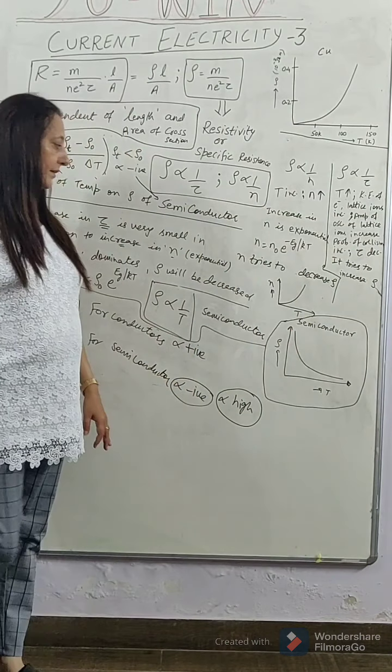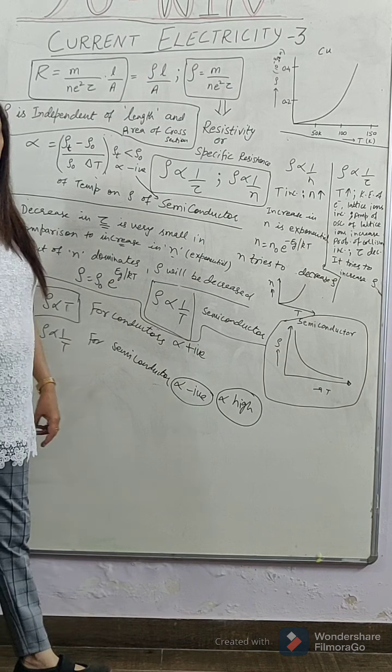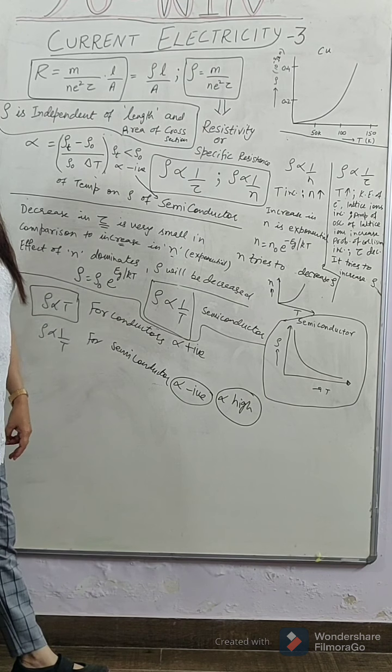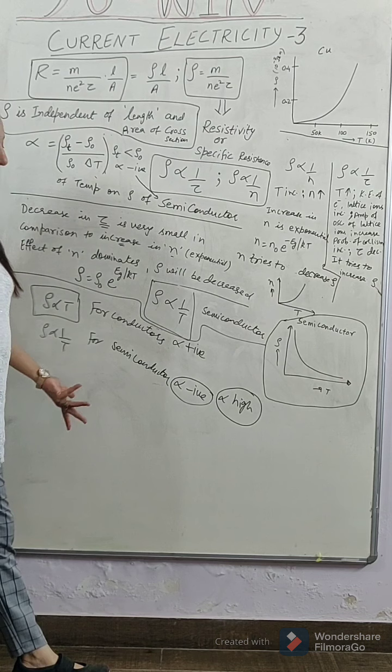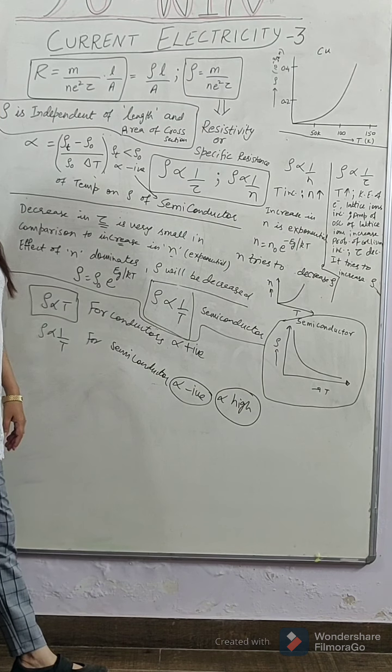While in case of insulators, these bonds are not covalent bonds. Insulator is a substance in which valence electrons are more than 4. So, they are ionic bonds. So, they take time to break up.